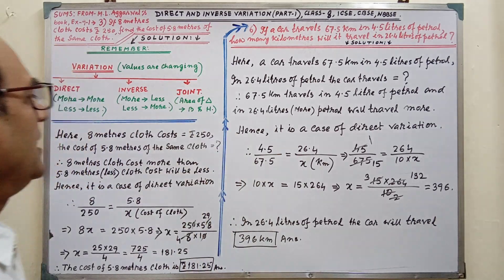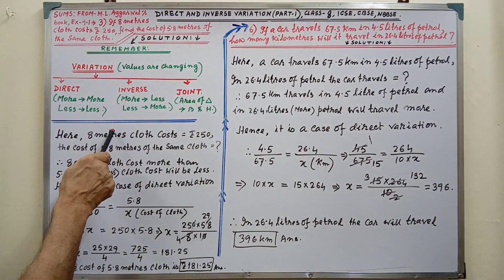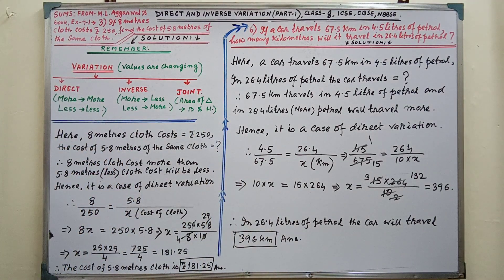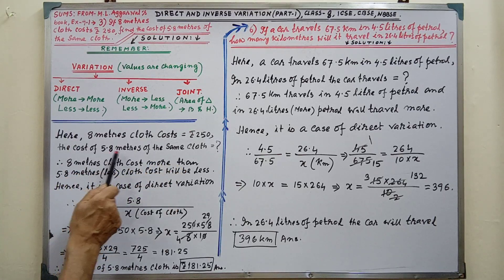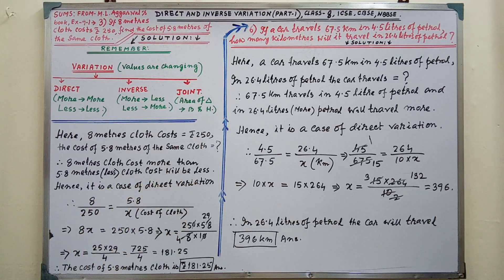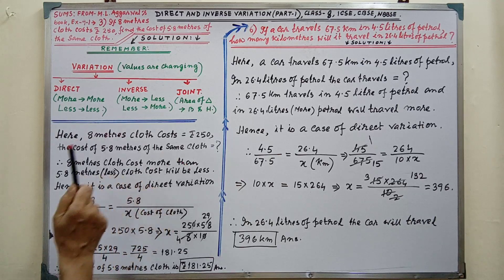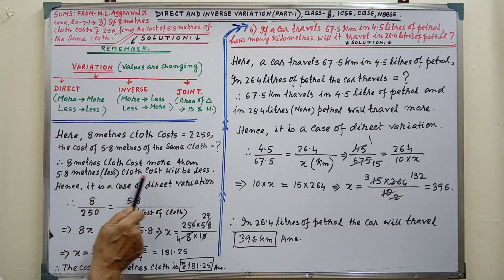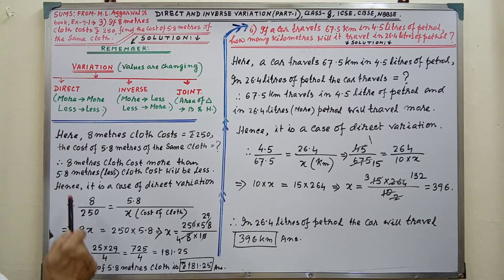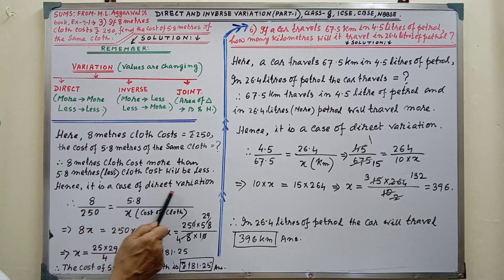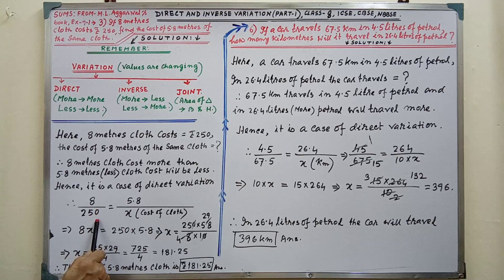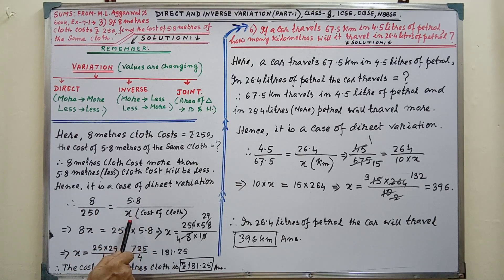This is joint variation. Now, pay your attention on the solution. Here, 8 meters cloth costs Rs. 250. The cost of 5.8 meters of the same cloth is what? 8 meters cloth costs more than 5.8 meters, that is less cloth, so cost will be less. Hence, it is a case of direct variation. Therefore, 8 by 250 equals 5.8 divided by X, the cost of cloth.